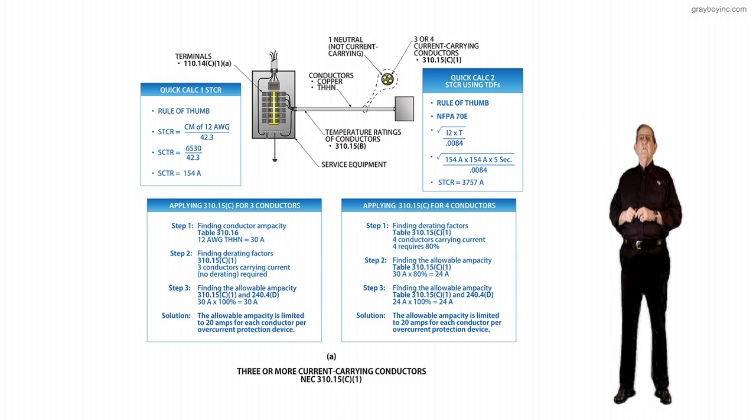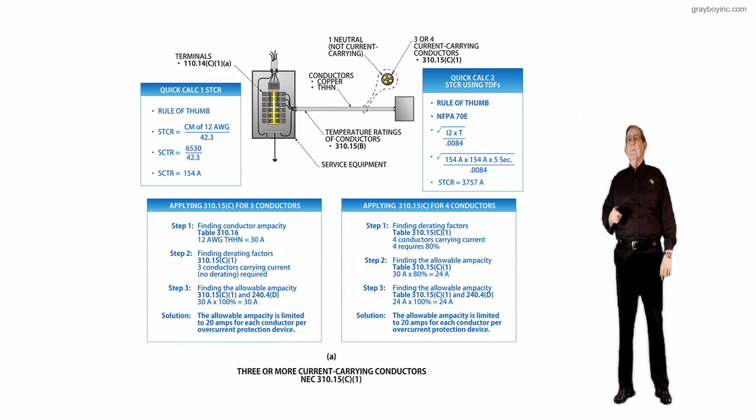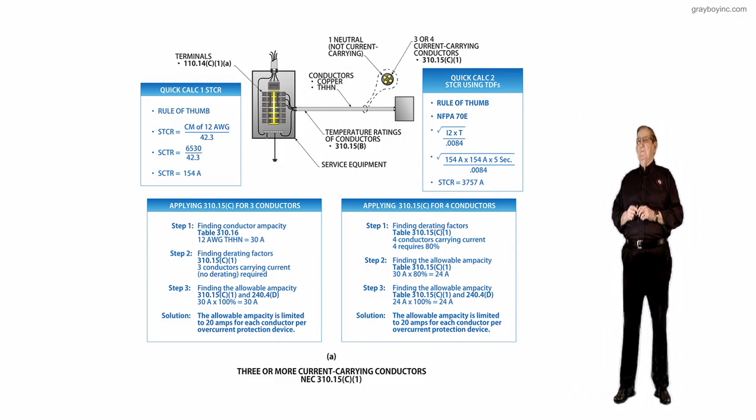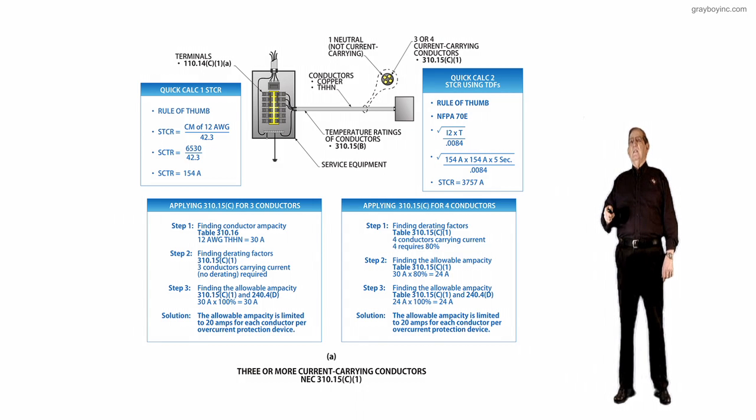Again, rule of thumb, if you actually calculated it, it could be different. Now let's look at quick count number 2 for the short-time current rating, but you're using time-delay fuses that will clear faster than 5 seconds. Then in PA-70E, you take current squared times clearing time, divided by 0.0084 seconds, and that's how fast a time-delay fuse will open.